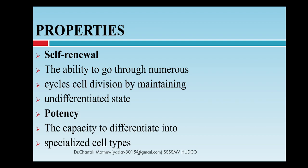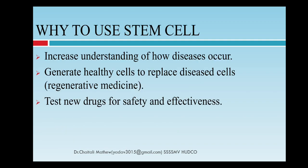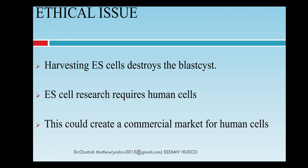The basic properties of stem cells are: self-renewal — the ability to go through numerous cell cycles while maintaining the undifferentiated state — and potency, meaning the capacity to differentiate into many types of specialized cells. The uses of stem cells include: increasing understanding of how diseases occur, generating healthy cells to replace diseased ones through regenerative medicine, and testing new drugs for safety and effectiveness.